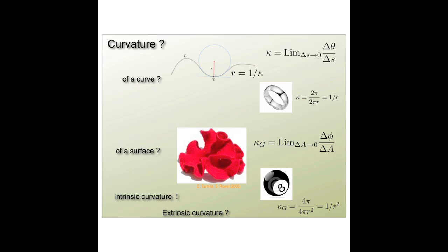There is a quantity called the Gauss curvature, named after a very famous German mathematician, Carl Friedrich Gauss, and defined a perfect analogy with this formula as the limit when the change in the area goes to zero of the solid angle divided by the area.